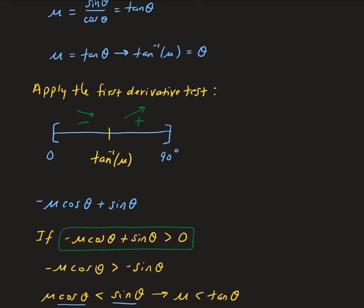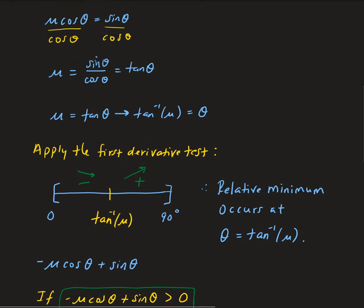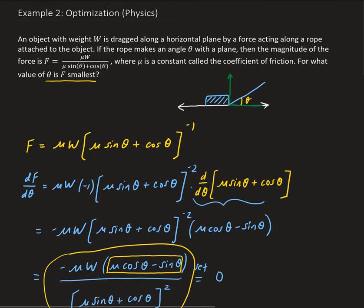So we can conclude that a relative minimum occurs at theta equals arctan(mu). That is the value of theta that will give us the smallest force.